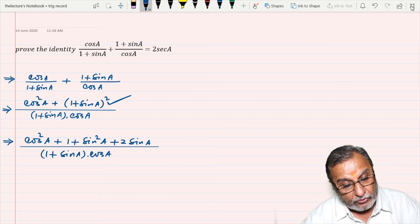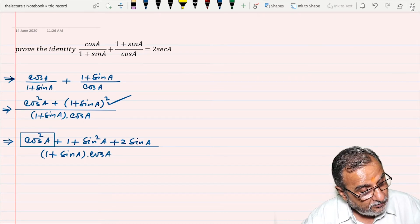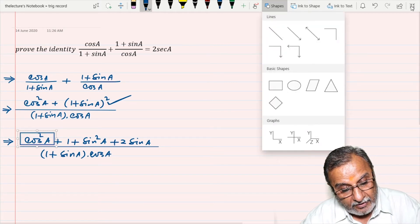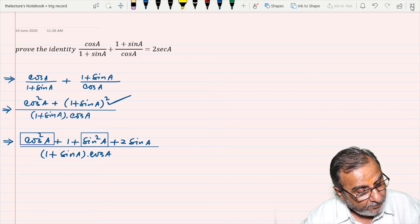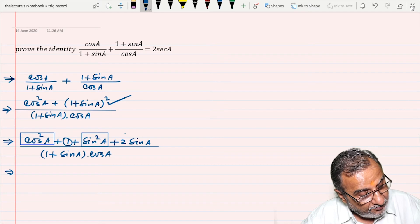So this cos² A and this sin² A becomes 1. So 1 and this one becomes 2.